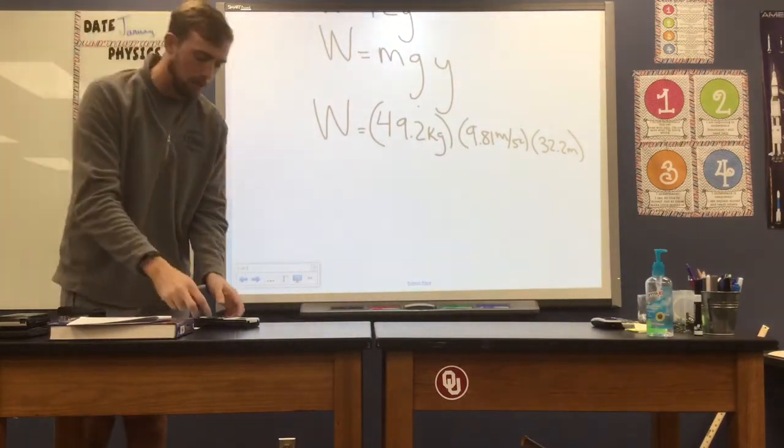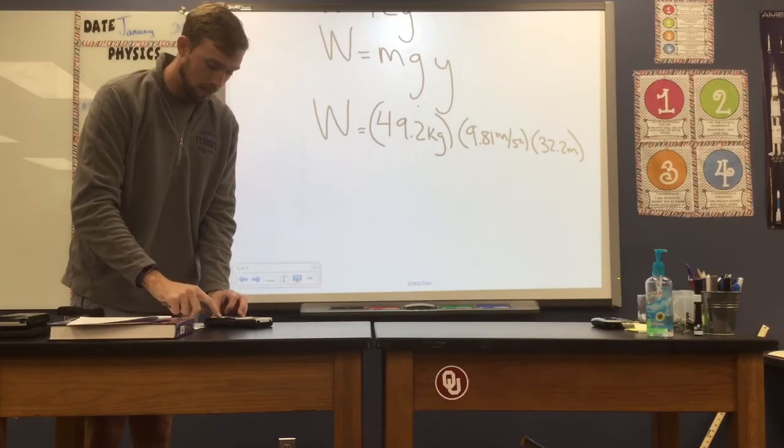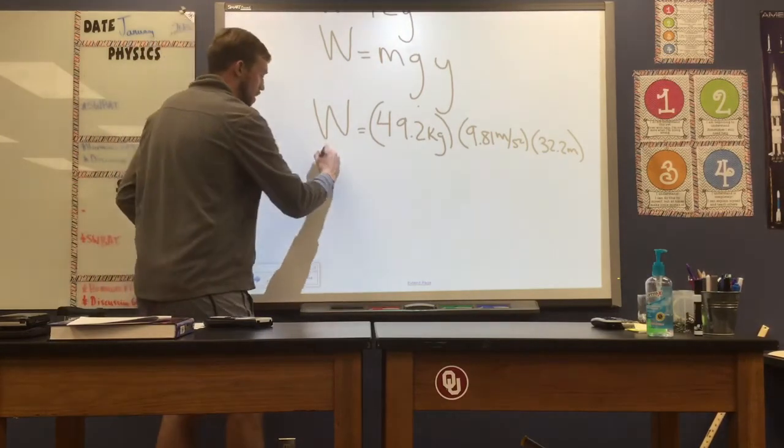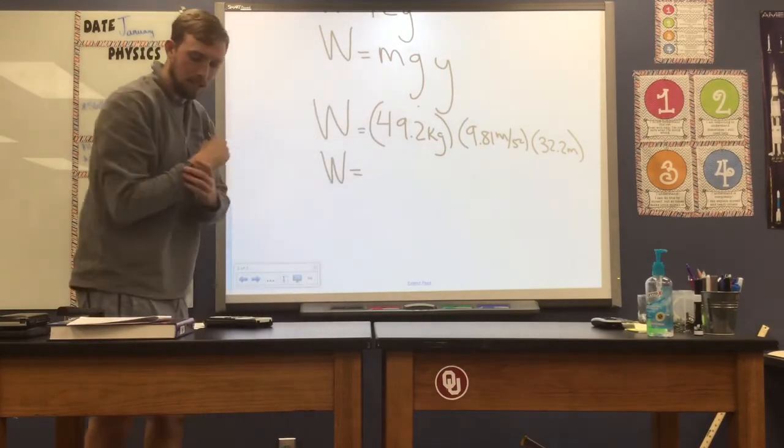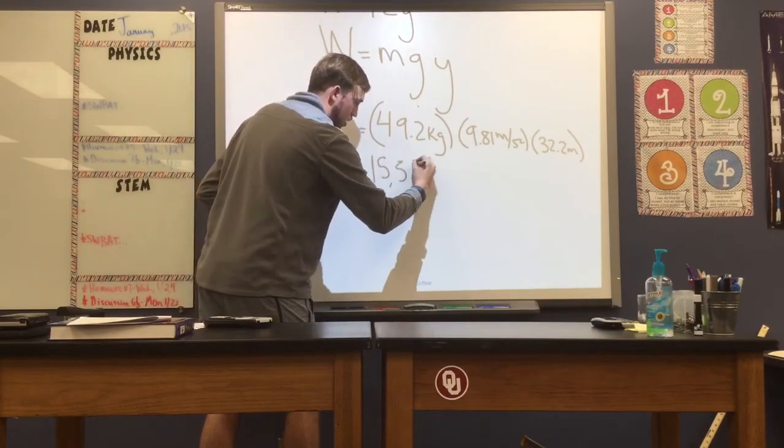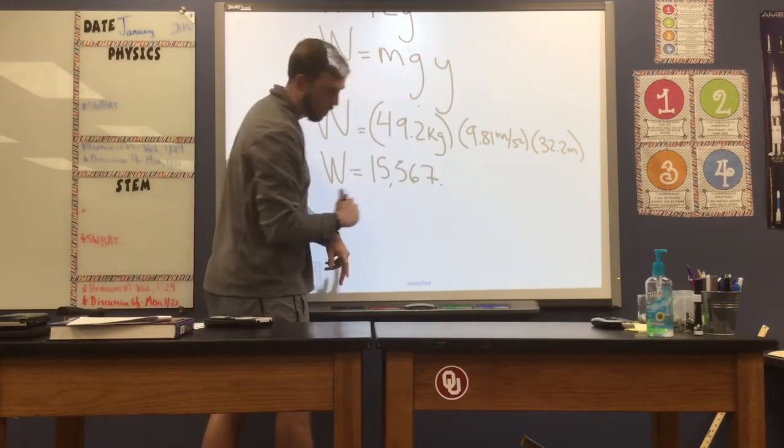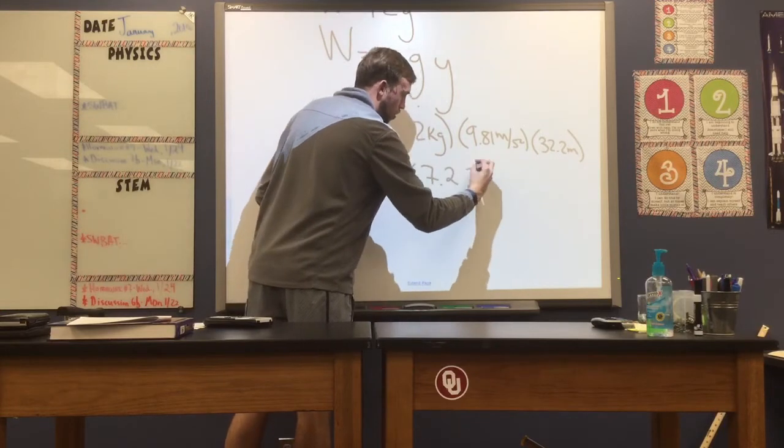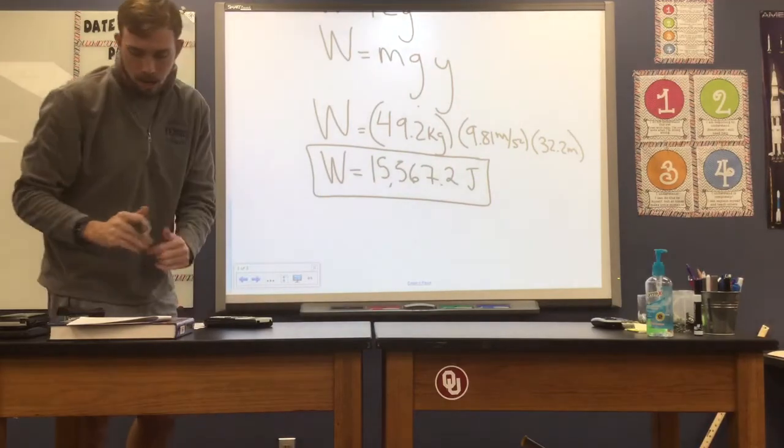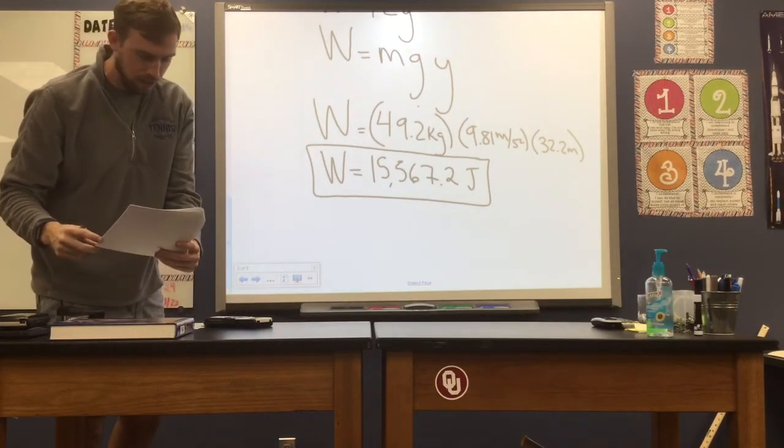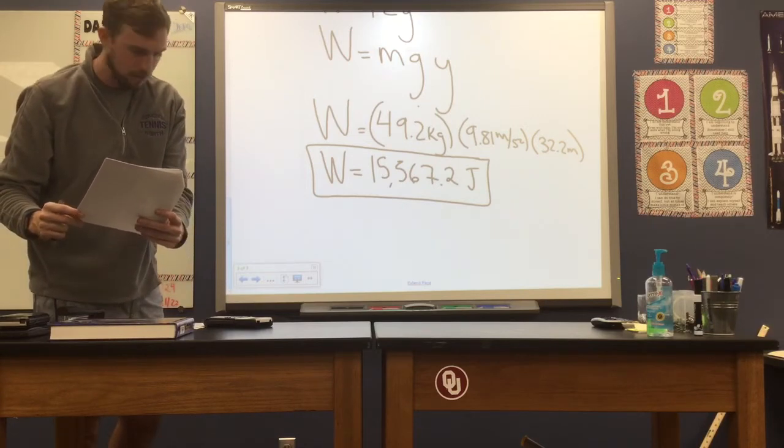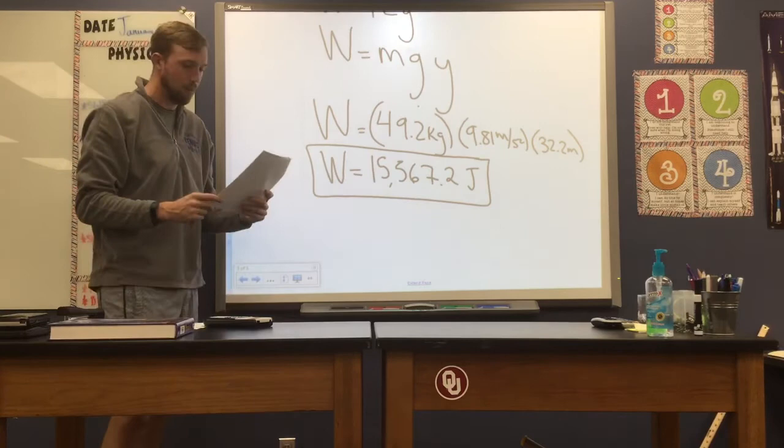So, now it's just a matter of plugging those in, doing a little bit of work. No pun intended. Okay. Now, you get a value for work. I'm multiplying mass times gravity times our height of 15,567.2 joules. Remember, work is measured in the same units as energy, so it would be in joules. Now, if I double check our key, it looks like we get 15,567. Is that what we got? That's what we got. There we go. We're right in the right range.